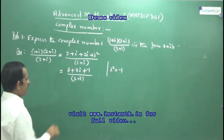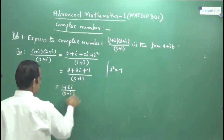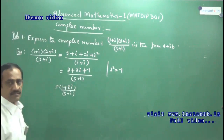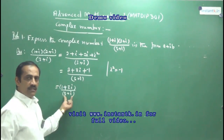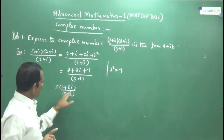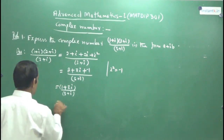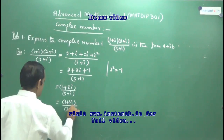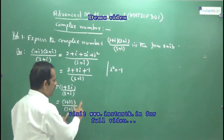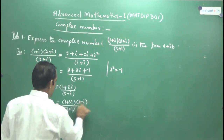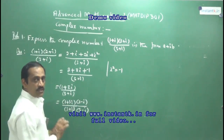Now take the conjugate of the denominator. The conjugate of 3+i is 3−i — conjugate means changing only the sign: plus becomes minus, minus becomes plus. Multiply both numerator and denominator by 3−i. Always put brackets when there is more than one term, because without brackets you won't get the correct answer. Writing this step carefully is very important.